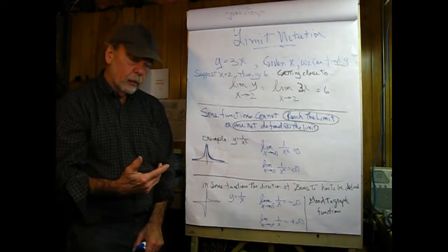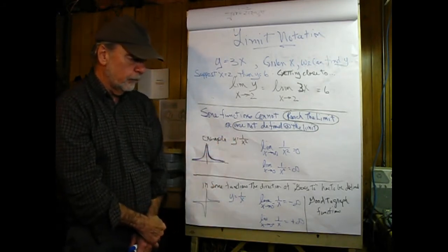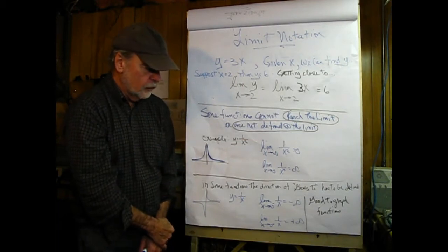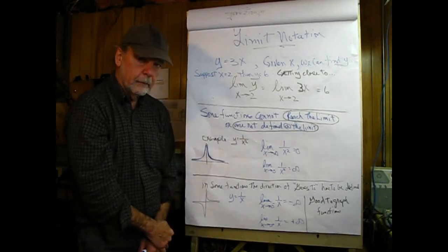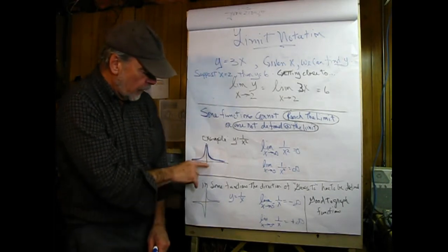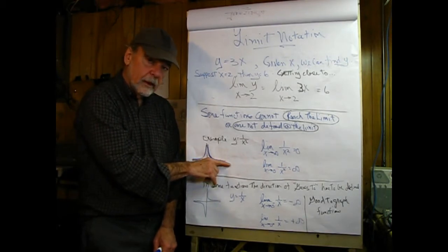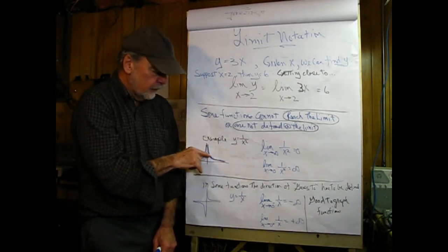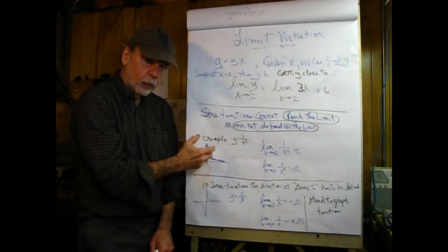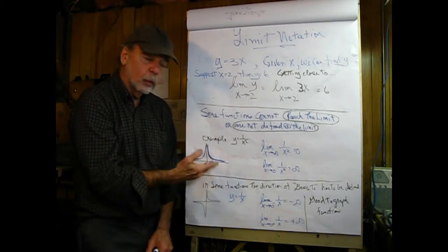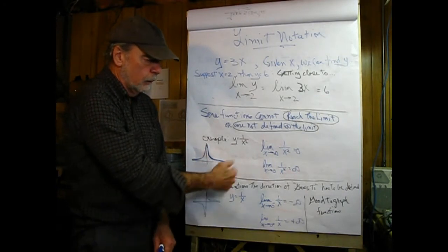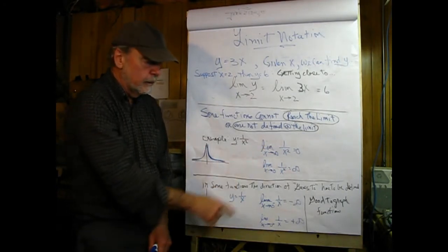An example of that would be the equation y equals 1 over x squared. Looking at the right side, we would say: what's the limit as x goes to infinity? What we find is that would be equal to 0. As x goes to infinity in that direction, there's an asymptote approaching 0, but it can never reach it with any real number, because infinity is a mathematical construct. But if we let it go to infinity, we can state it ends up being 0.